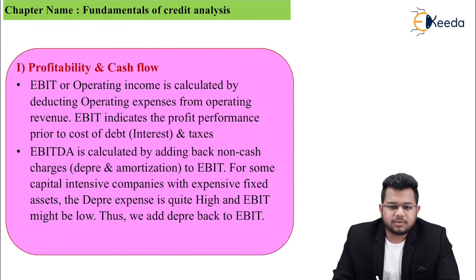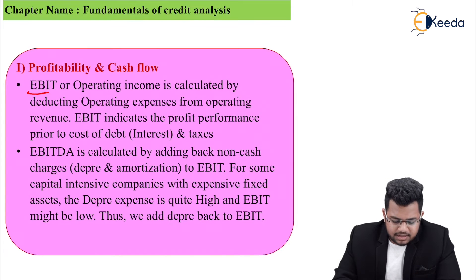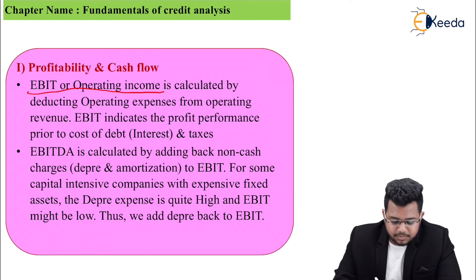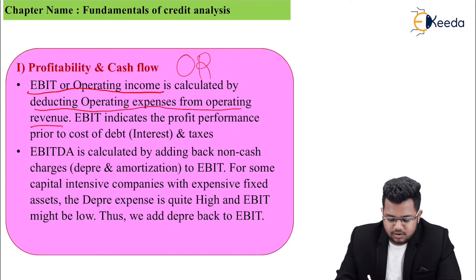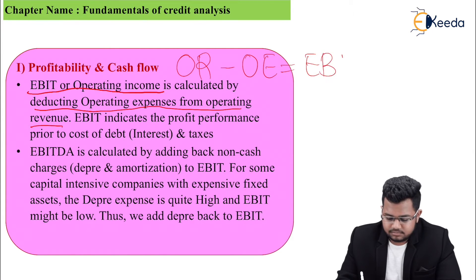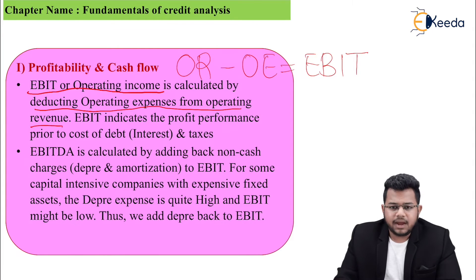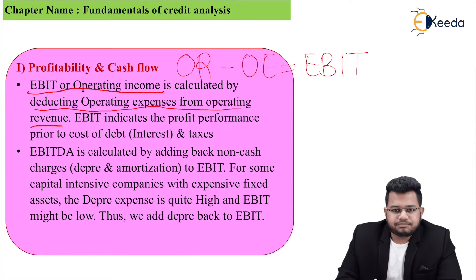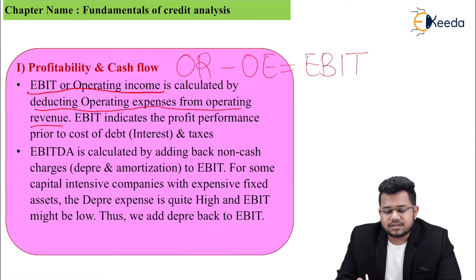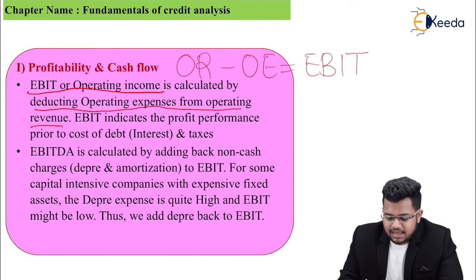Now let's study each measure in detail. First: EBIT, or operating income. EBIT is calculated by deducting operating expenses from operating revenue — operating revenue minus operating expense equals EBIT. EBIT indicates the profit performance prior to the cost of debt and taxes, meaning before deducting interest and taxes.